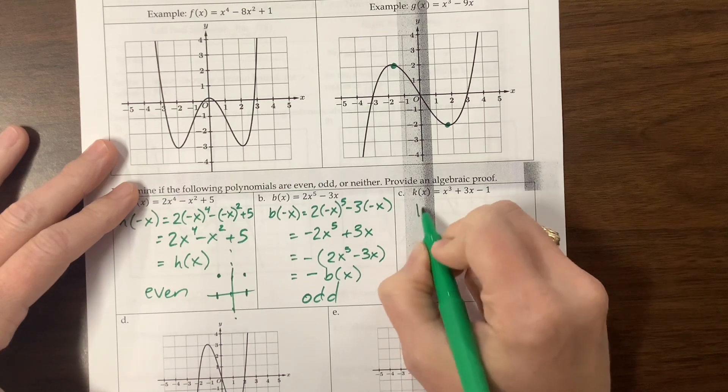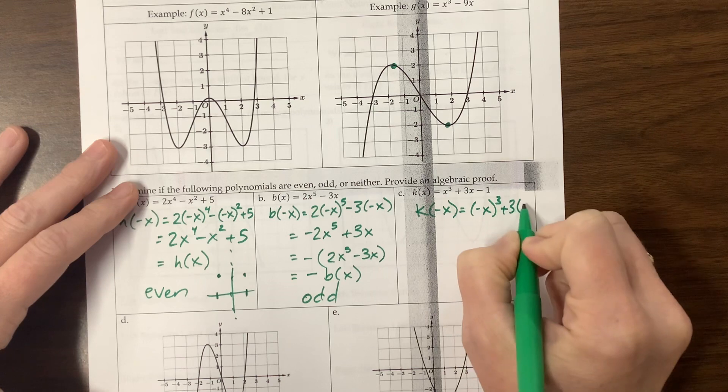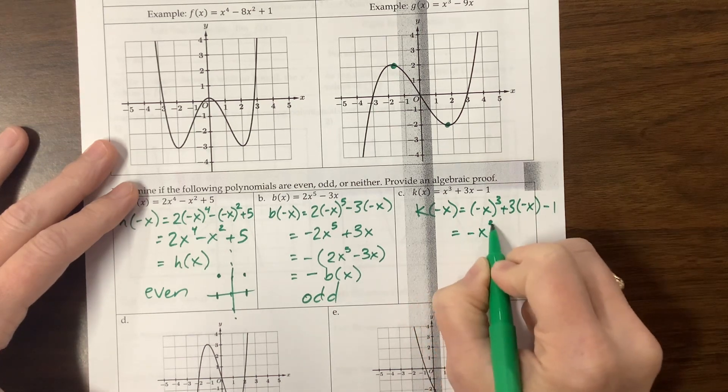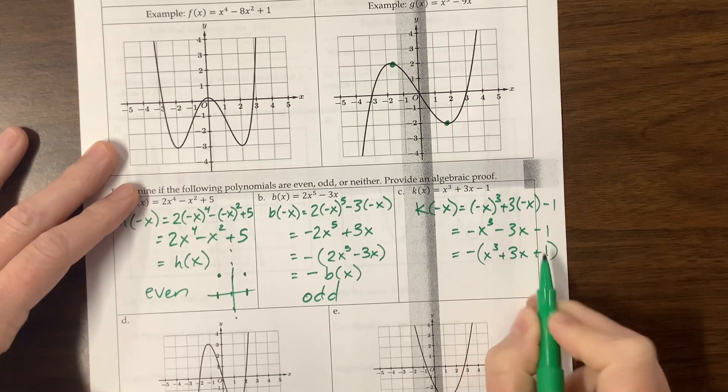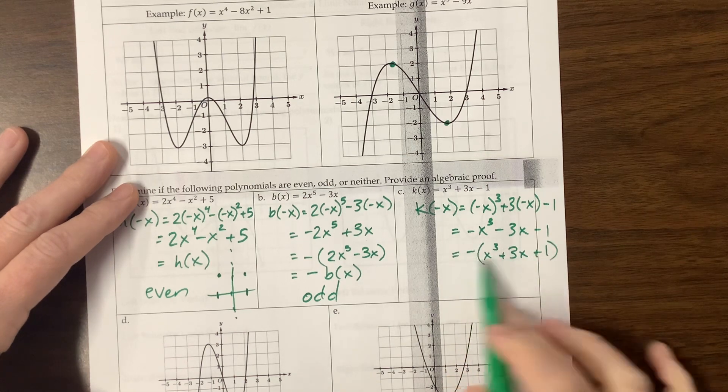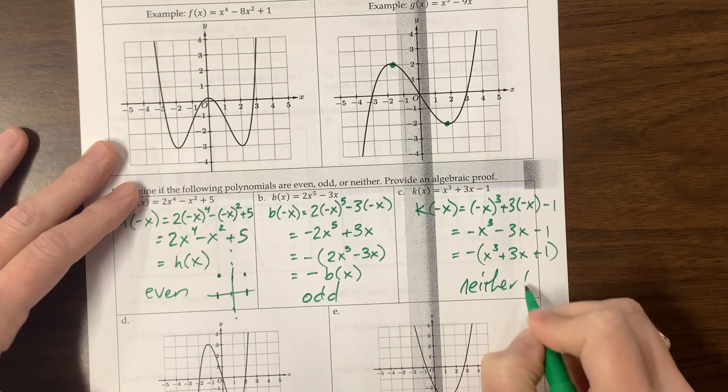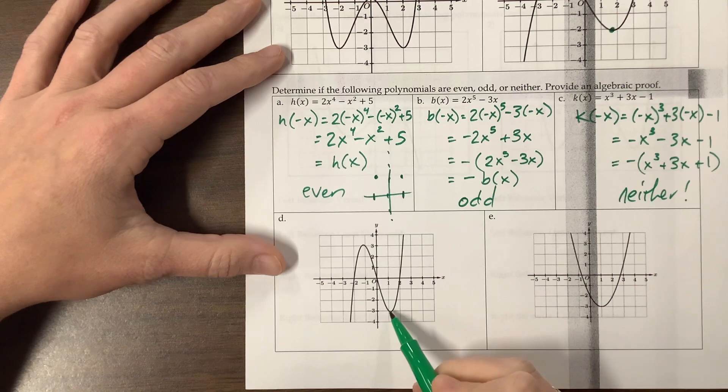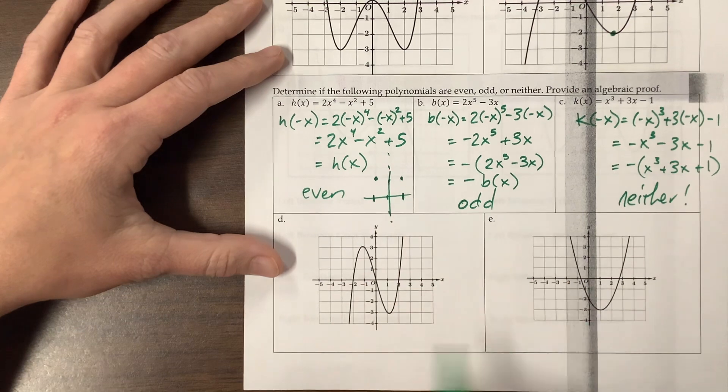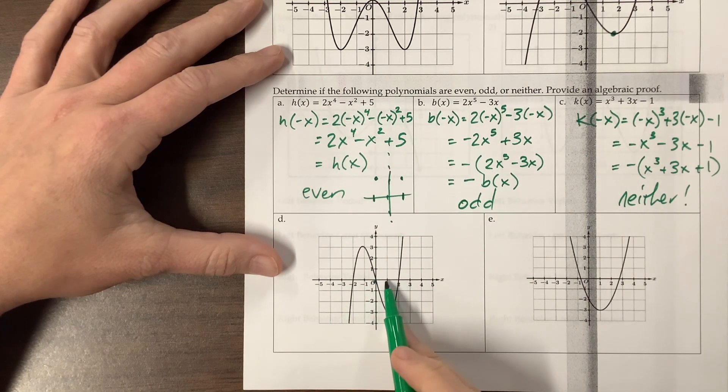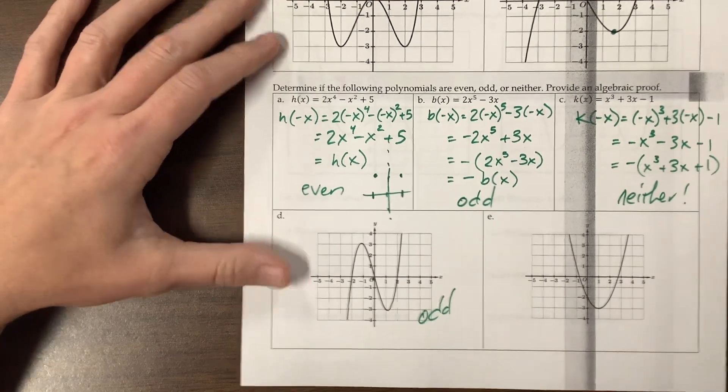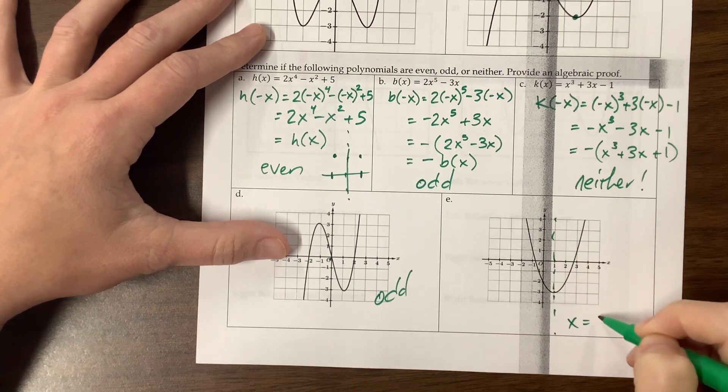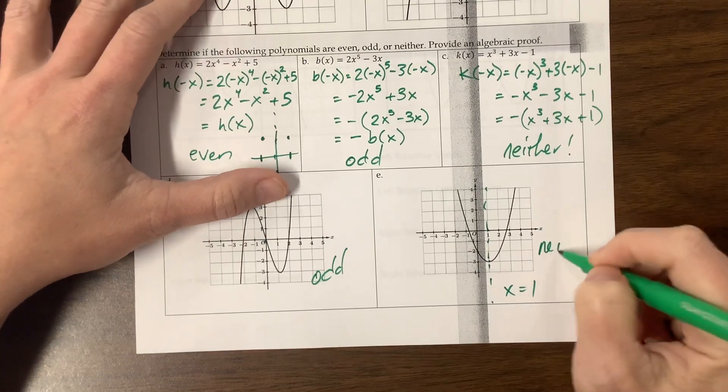This next one, let's see. K of negative x is equal to negative x cubed plus 3 times negative x minus 1. This gives us a negative x cubed minus 3x minus 1. If I factor out the negative, x cubed plus 3x plus 1, x cubed plus 3x minus 1, this is not what I started with. And it's not exactly opposite of what I started with. We will say neither. Last one here, I see that this one appears to have symmetry around, so it's kind of rotated around the origin. So if I'm at positive, whatever I had at positive 1 ends up was a negative y value. Well, negative 1 had that positive of the same y value. So this would be an odd function. This one has symmetry over the line x equals 1, but that doesn't mean anything. This is neither. I mean, they're symmetry, but it's just not the correct kind of symmetry.